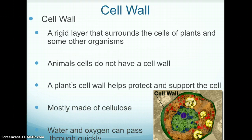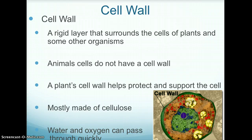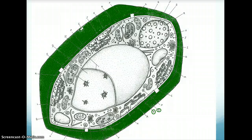The cell wall is an organelle. The cell wall is a rigid layer that surrounds the cells of plants and some other organisms. Animal cells do not have a cell wall. The purpose of a cell wall is to protect and support a cell. The cell wall is mostly made of cellulose. Water and oxygen can pass through the cell wall quickly. The cell wall is colored green in this plant cell.